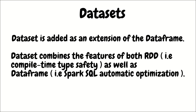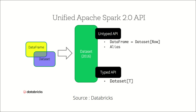The third API is Dataset. Dataset is actually added as an extension of DataFrame — it has been inherited from DataFrame. In recent Apache Spark documentation, Dataset is now the basic abstraction Spark follows, not RDD. A Dataset combines the features of both RDD and DataFrame — it takes compile-time type safety from RDD and takes advantage of the automatic optimization from DataFrame. So the Dataset has inherited the positive features from both APIs, which is why I'd say Dataset is the best of these three.